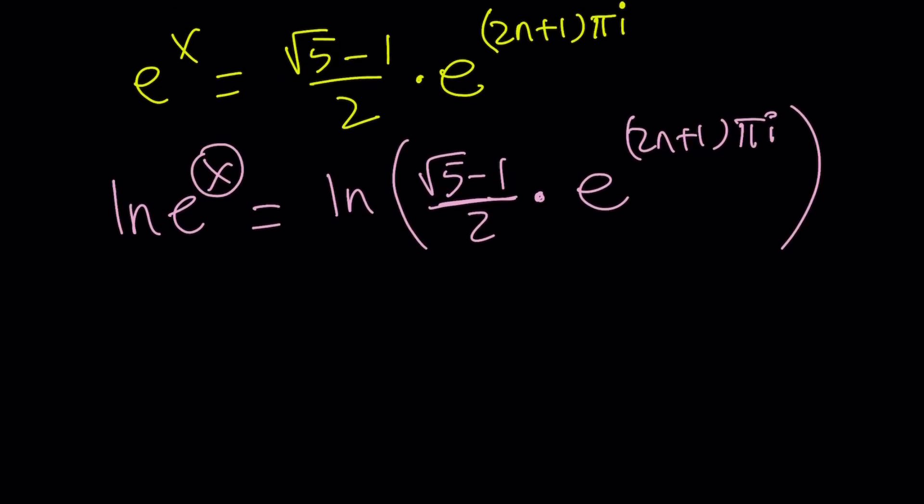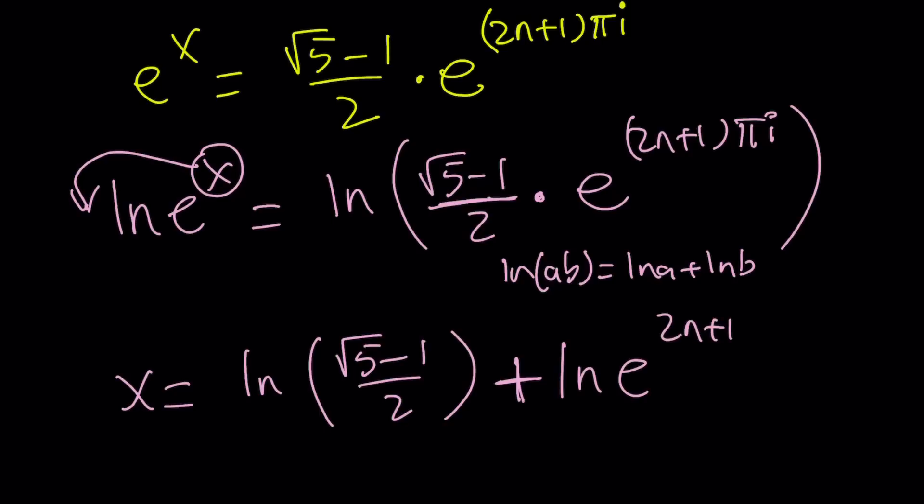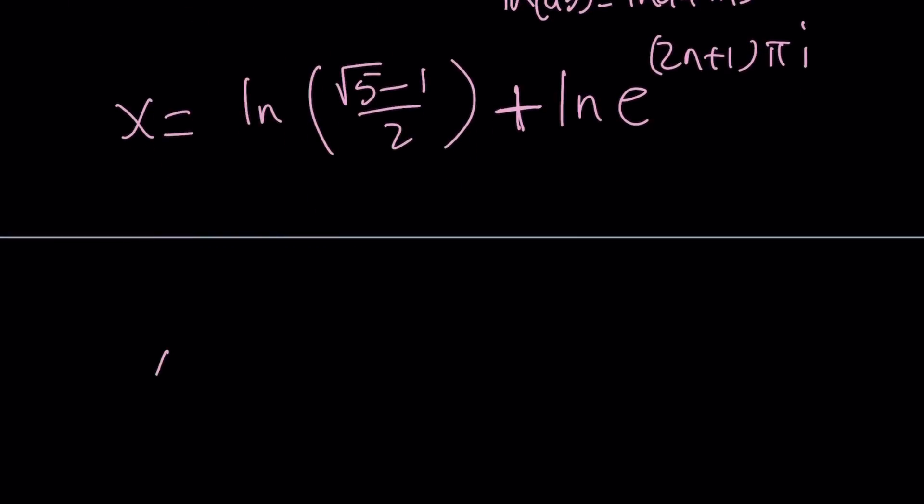Before I leave it like a mess, let's go ahead and separate them. ln a b is ln a plus ln b, right? So, if you use it, ln root 5 minus 1 over 2. By the way, this is a real number because root 5 minus 1 over 2 is positive. Plus ln e to the power, and now we can write it as ln root 5 minus 1 over 2 plus 2n plus 1 pi i. And that is going to be our complex non-real solution.